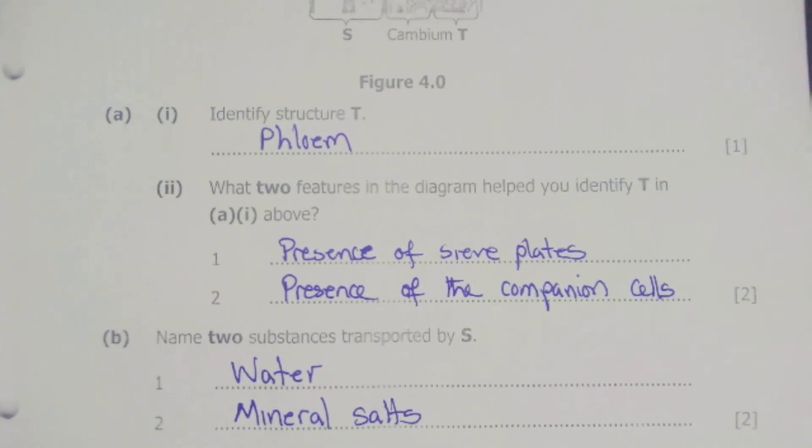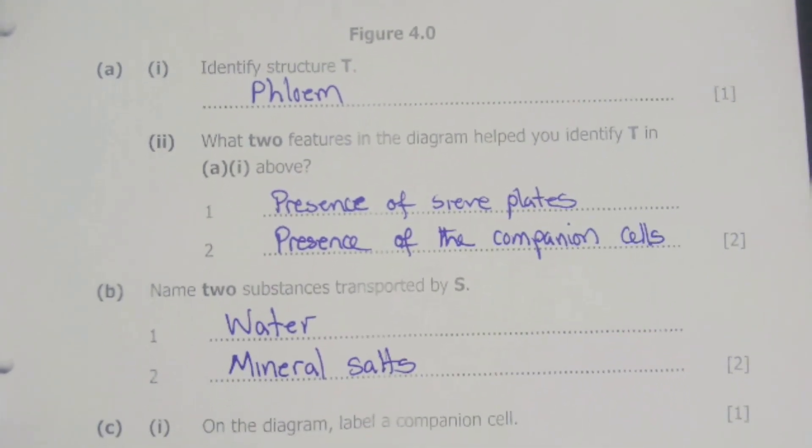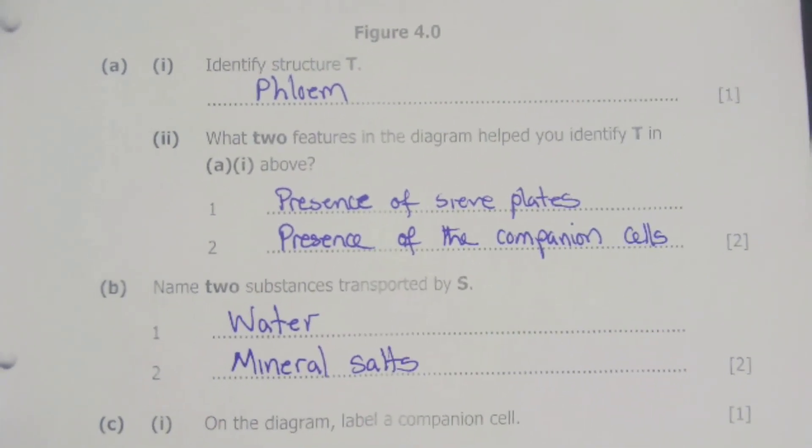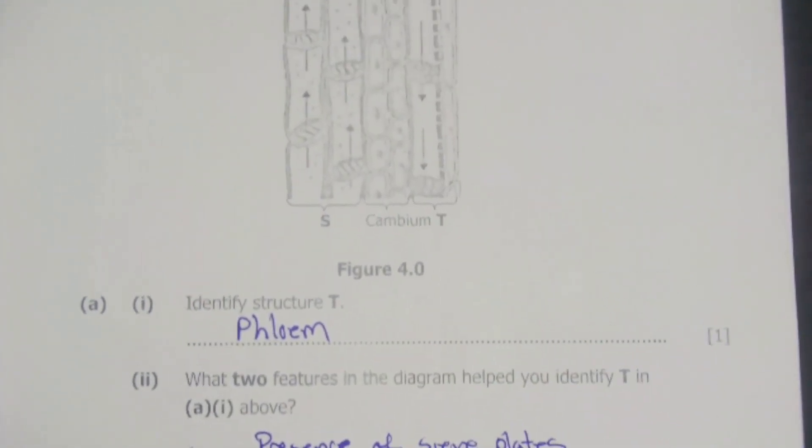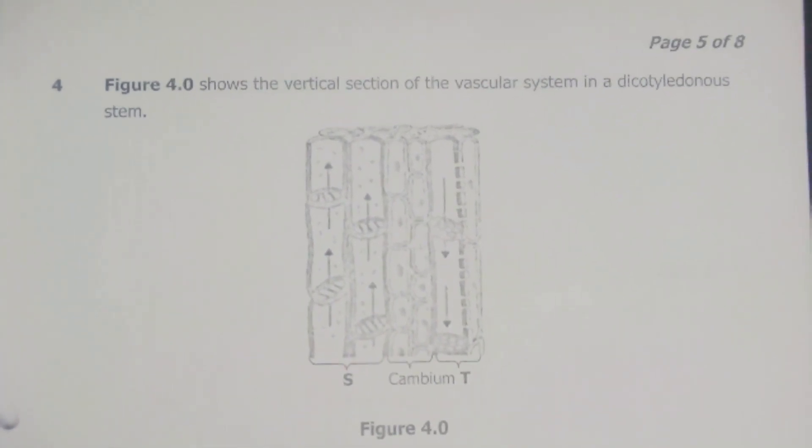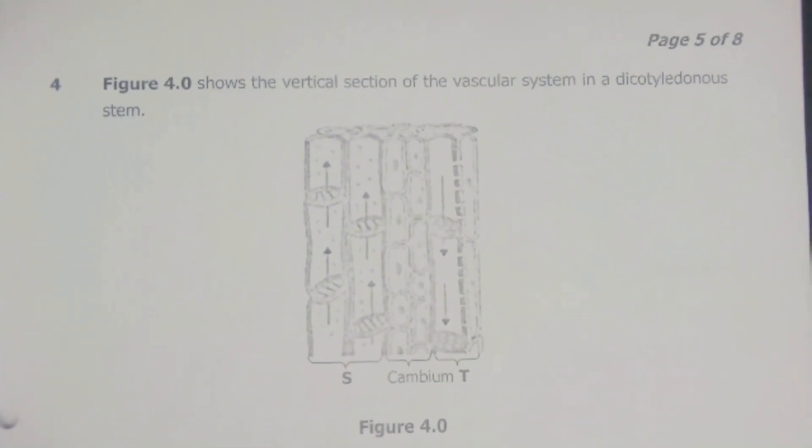Then the next question is C1 and C1 says on the diagram label a companion cell. So we go back to our figure 4.0. Here we said that these cells which are joining structure T is actually the companion cell.